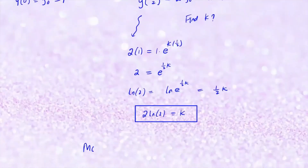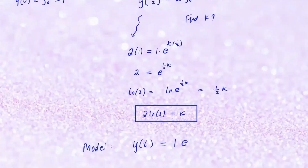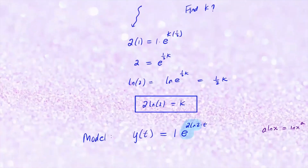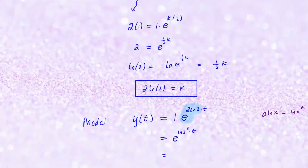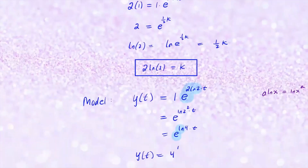Now let's write out the model for this scenario. The amount at any given time t equals the initial amount times e to the k — that's two ln 2 times t. Let's simplify using the laws of logarithms: a times ln x can be written as ln of x to the power a. So we have e to the ln of two to the power 2t, which means e to the ln of four times t. Since ln and e cancel, our simplified model is simply four to the power t.